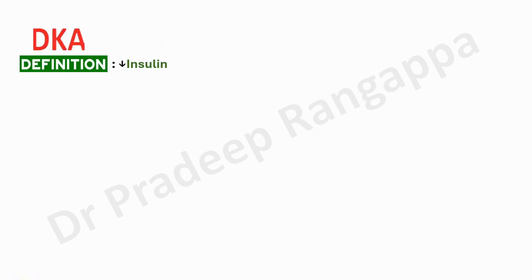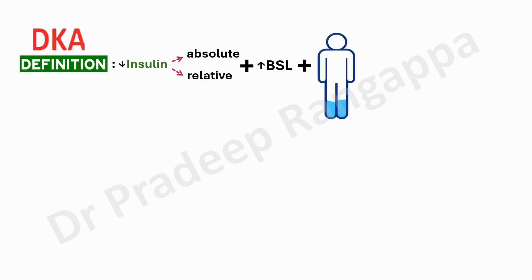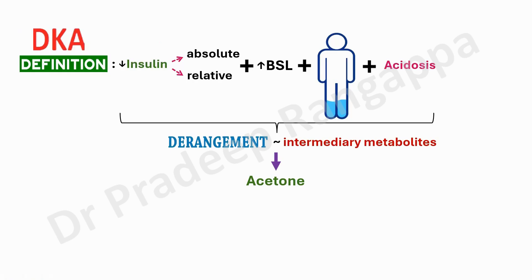This is very similar to DKA. The components of diabetic ketoacidosis include reduced insulin — it could be absolute or relative — combined with an increase in blood sugar. This increase in blood sugar tends not to be present in euglycemic diabetic ketoacidosis. And of course, there will be dehydration and acidosis. These are the four components of diabetic ketoacidosis, along with derangement of intermediary metabolites leading to accumulation of ketoacids.